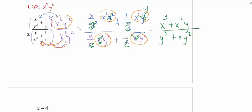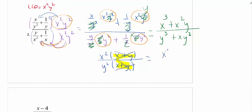Once it's a single fraction, see if you can factor the numerator and denominator and cancel. In the numerator I can pull out an x squared, leaving me with x plus y. In the denominator I can pull out a y squared, leaving me with x plus y. These binomials match, so I can cancel them. I'm left with x squared over y squared as my answer.